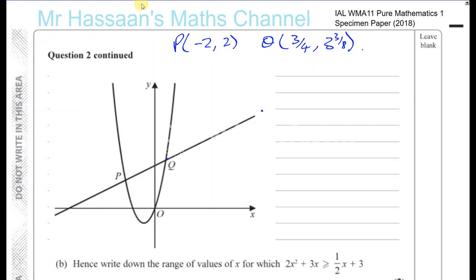Okay, now for part B. So we've worked out that P and Q coordinates are minus 2, 2 and 3 quarters and 3 and 3 eighths. And then it says, hence write down the range of values of x for which 2x squared plus 3x is greater than or equal to a half x plus 3. Now this is something which is new in the syllabus of this P1 as compared to the old C12.